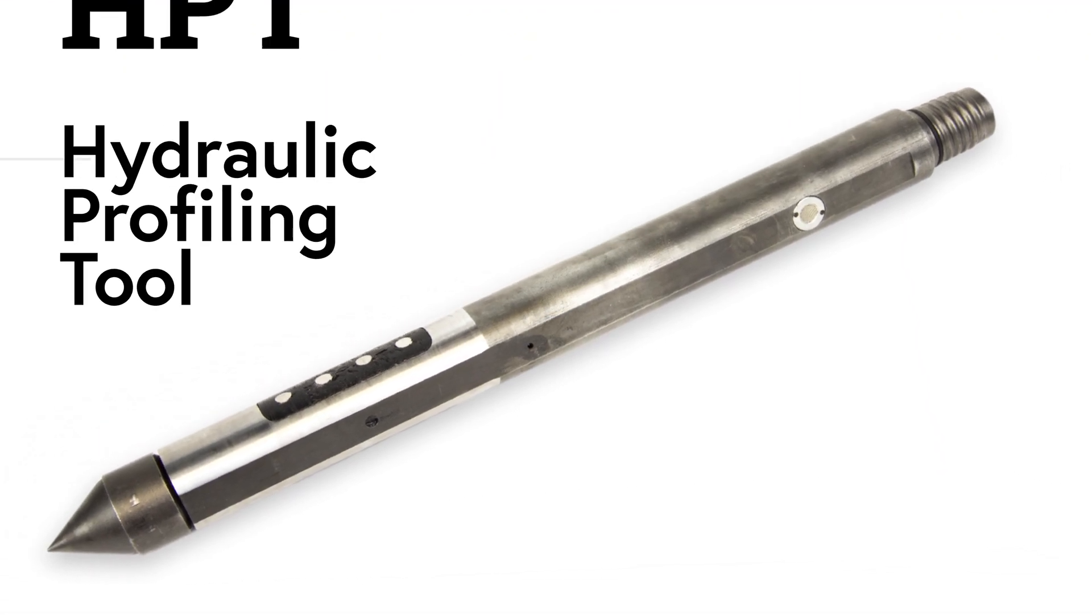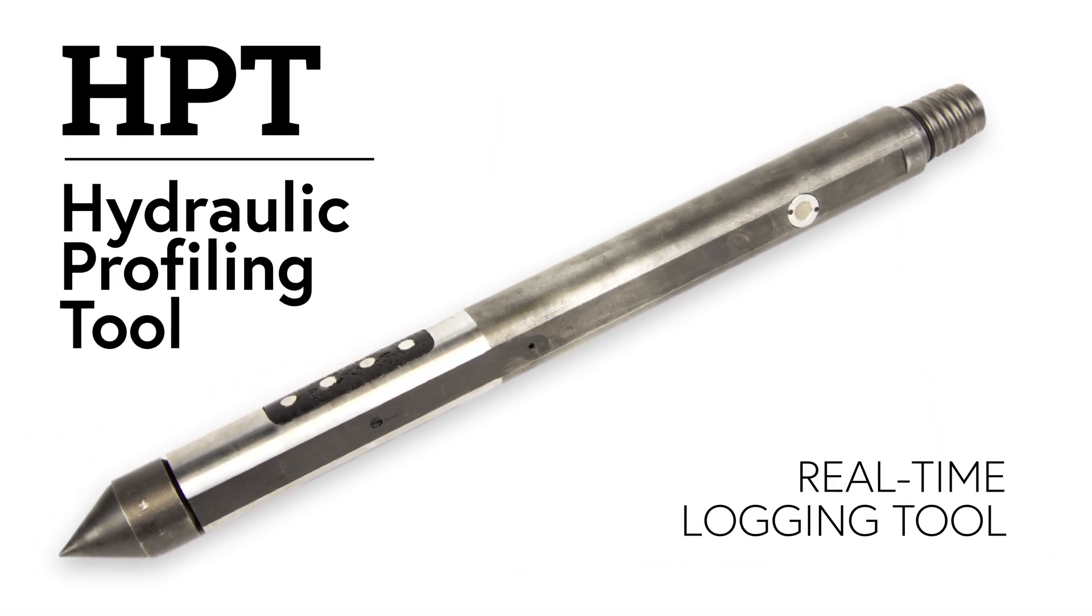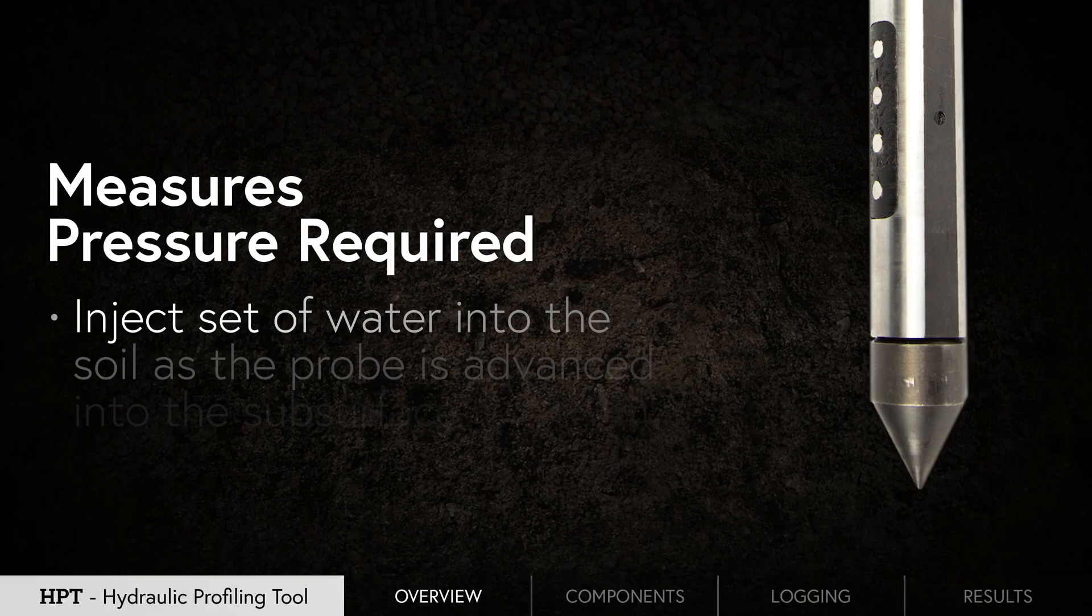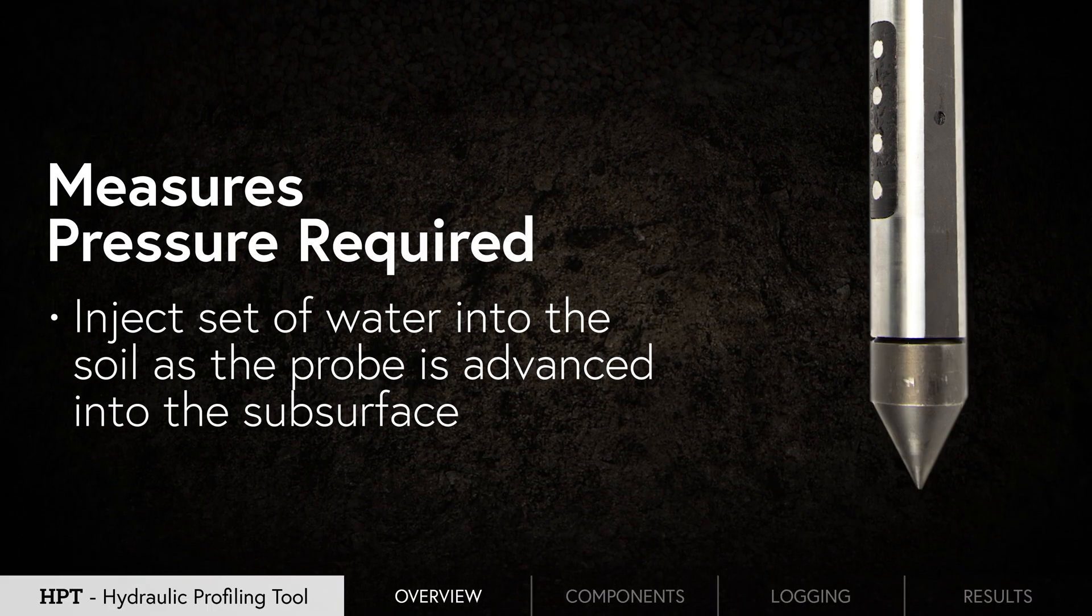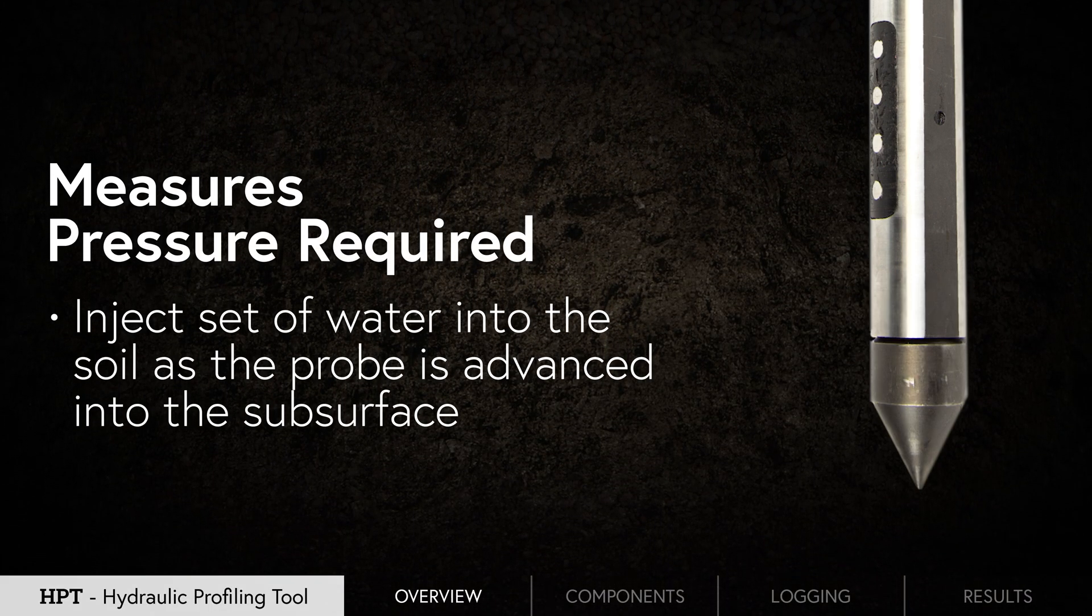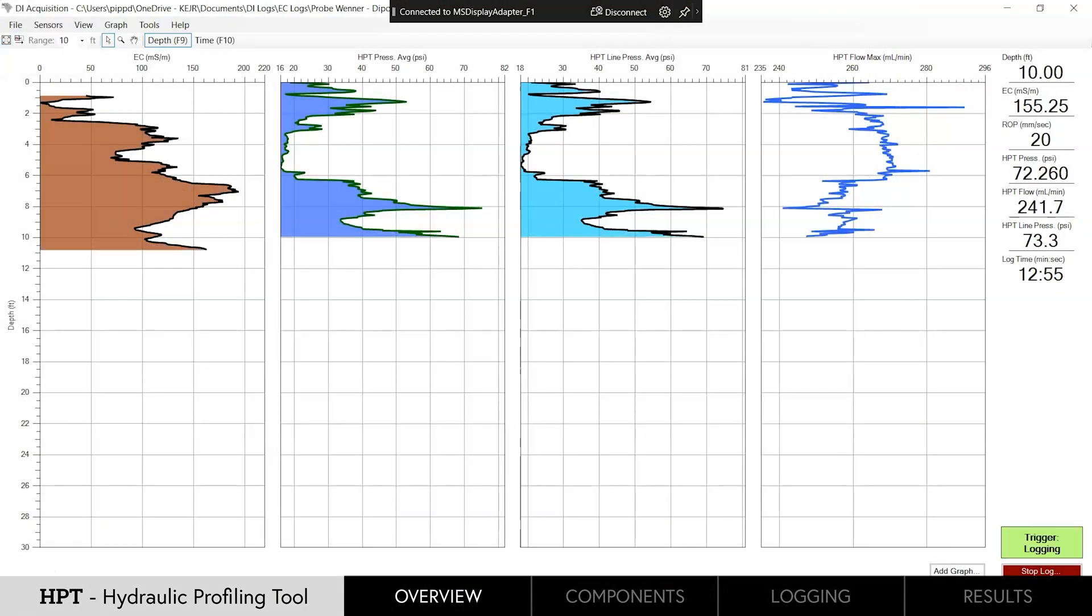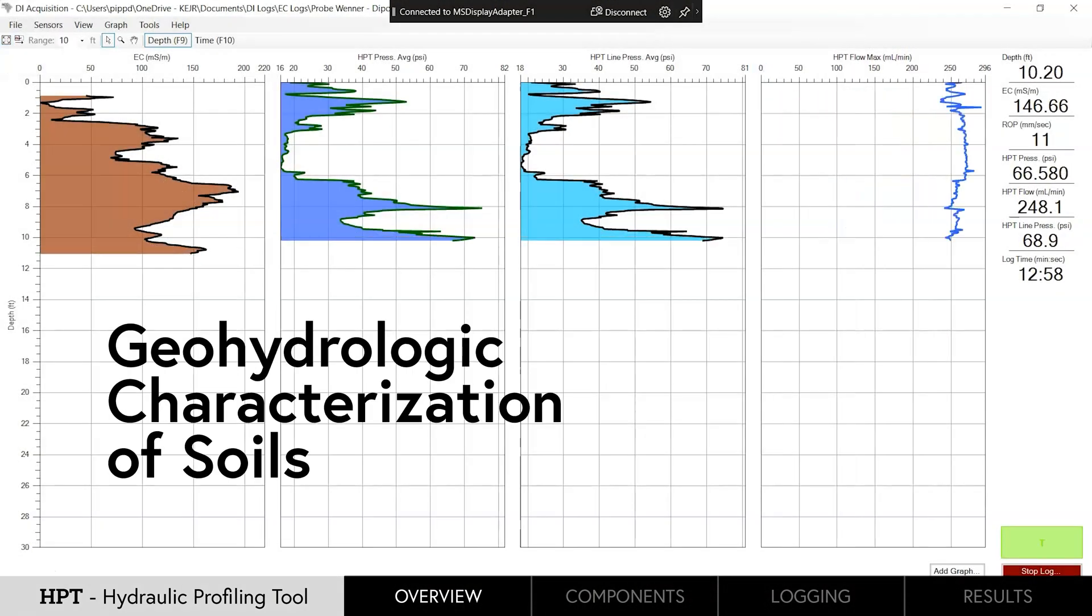The hydraulic profiling tool from Geoprobe is a real-time logging tool that measures the pressure required to inject a set flow of water into the soil as the probe is advanced into the subsurface. HPT logs are used to determine the geohydrologic characterization of soils.